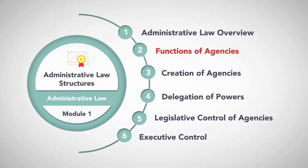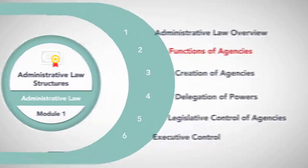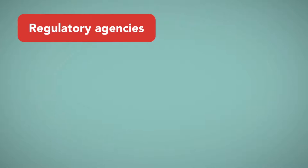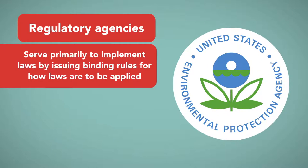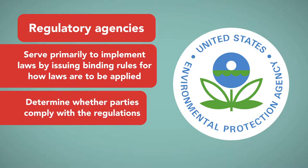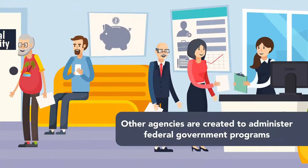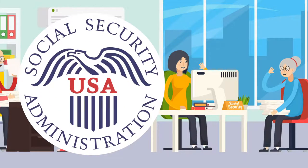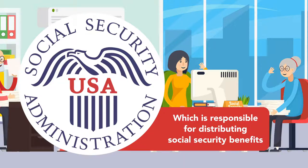Functions of agencies. Broadly speaking, federal agencies perform three types of functions. Regulatory agencies, such as the Environmental Protection Agency, serve primarily to implement laws by issuing binding rules for how laws are to be applied and to determine whether parties comply with the regulations. Other agencies are created to administer federal government programs, such as the distribution of legally entitled governmental benefits. An example of this type of agency is the Social Security Administration, which is responsible for distributing Social Security benefits.